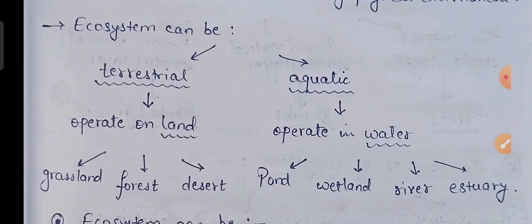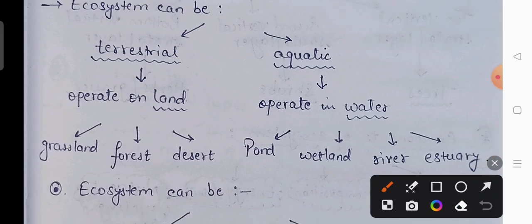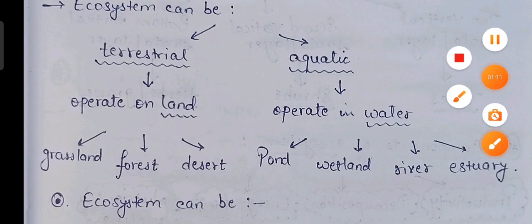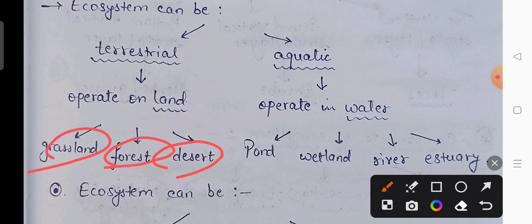It could be a terrestrial ecosystem or it could be an aquatic ecosystem. Terrestrial ecosystem woh hota hai jo zameen pe operate karta hai. Example is grassland, forest, and desert — yeh saare zameen pe operate hone wale ecosystem hain.